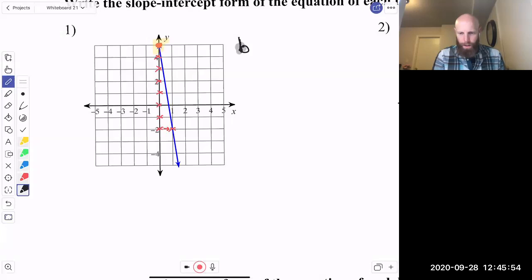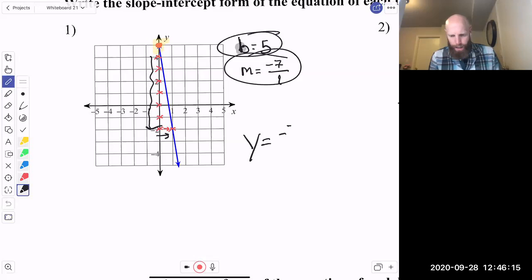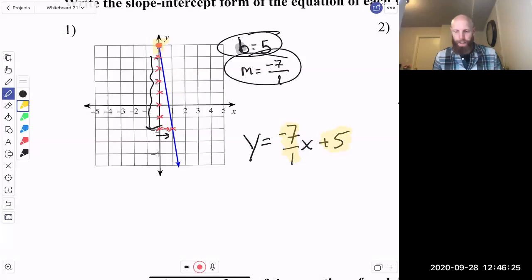And the slope equals, remember, we went down seven. So negative seven. And then I went to the right one. So negative seven over one. Alright, there it is. You got the two pieces. Now I'll just put that together. So y equals negative seven over one x plus five. Again, remember, we are really focused on those two numbers in there. And the y and x always are there. It always persists to be there. So I'm going to just, let's go y equals negative seven, because negative seven over one is negative seven x plus five. Boom. There we go.